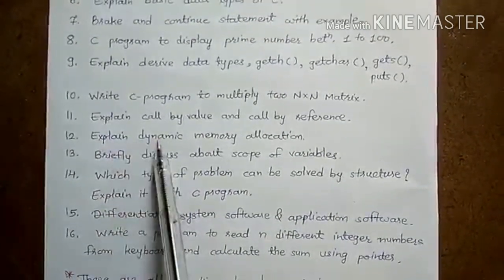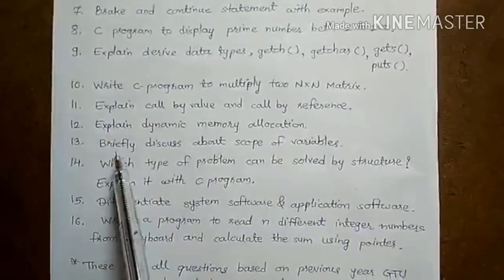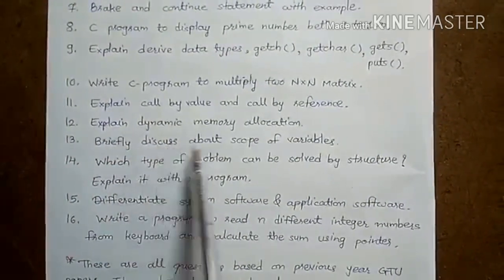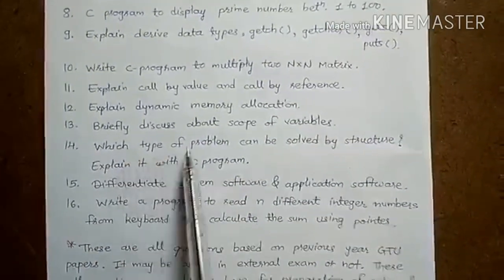Twelve, explain dynamic memory allocation. Thirteen, briefly discuss about scope of variables. Fourteen, which type of problems can be solved by structure? Explain it with C program.